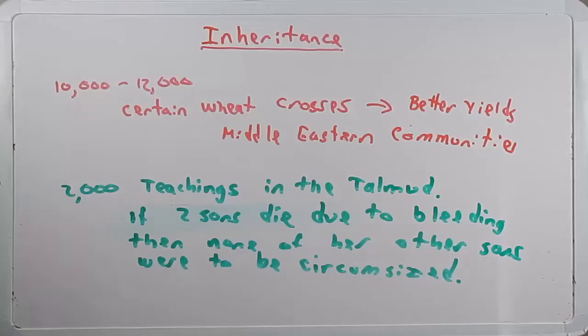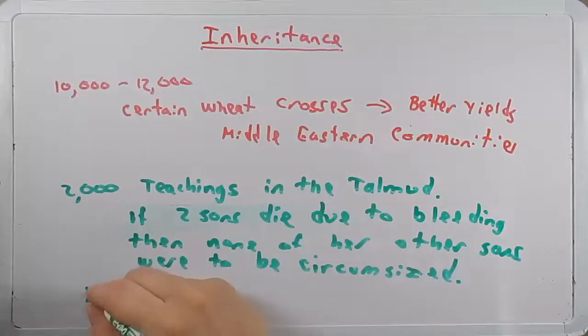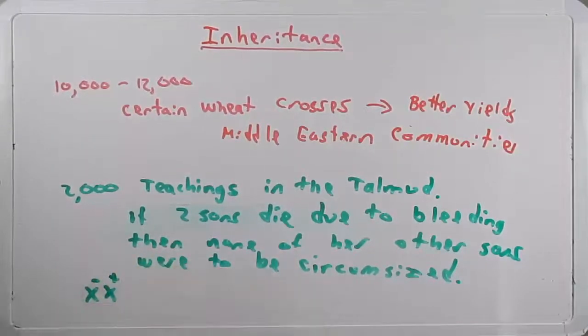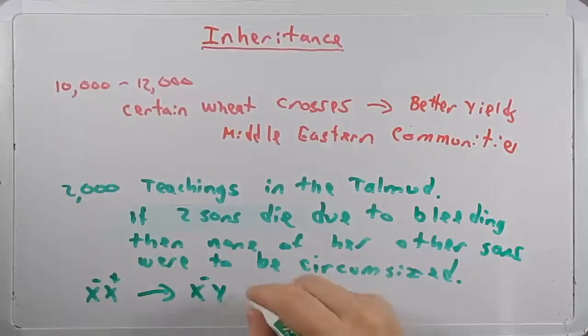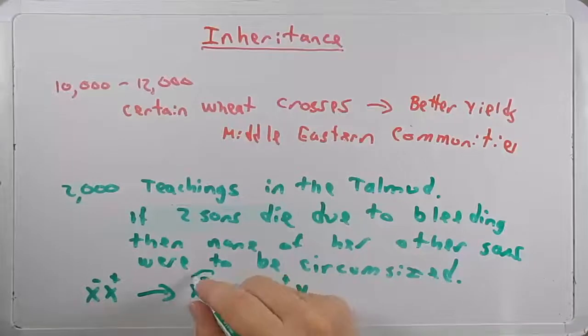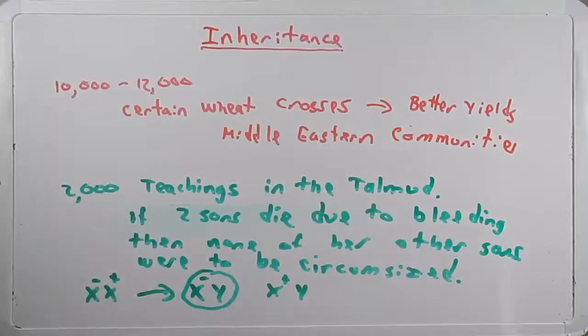And so, if a mother, and we can just draw her like this, was heterozygous for this mutation, so we'll put a minus and a plus, when she has a son, half of her sons will have hemophilia, these here.